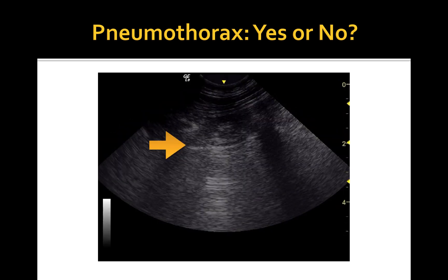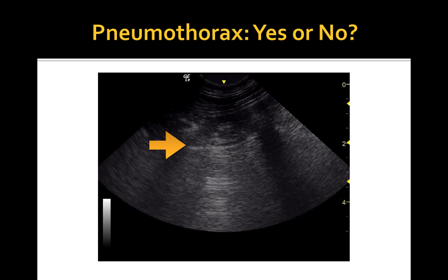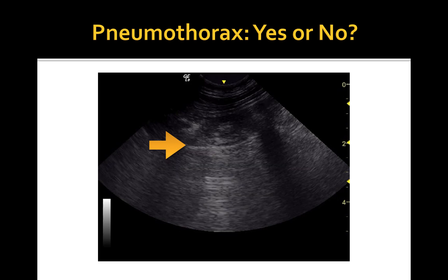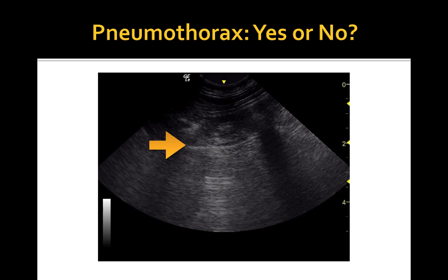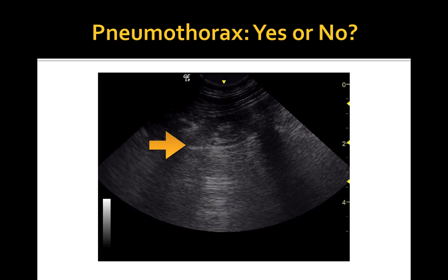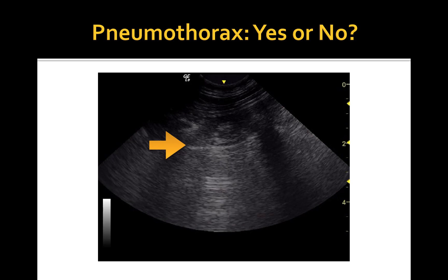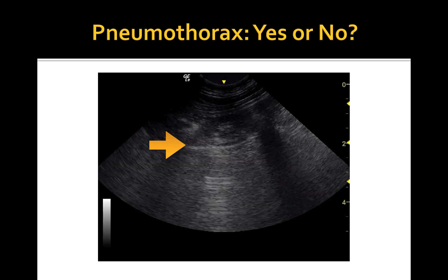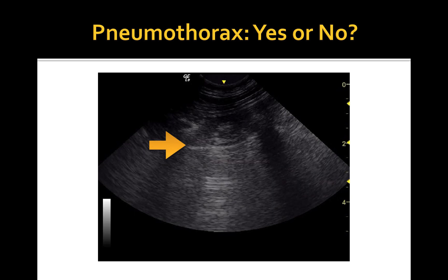In this case the patient has a pneumothorax. Even though there is some motion of the chest wall and muscles caused by patient respiration, there is no shimmering or obvious gliding at the level of the pleural line.